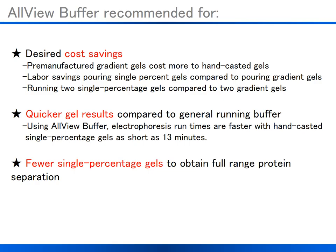Using AllView running buffer allows fast electrophoresis run times as short as 13 minutes at 250 volts, giving quicker gel results. Additionally, using fewer single percentage gels to obtain full range protein separation is possible. Some labs run one low percentage gel for high molecular weight proteins and one high percentage gel for low molecular weight proteins — a total of two gels. Using AllView Buffer, only a single 6% gel is required instead of two separate gels.